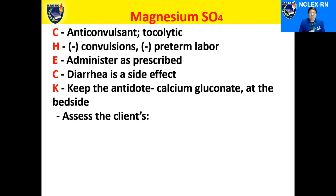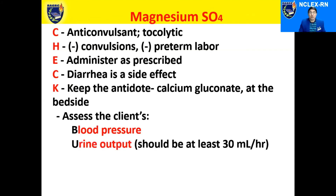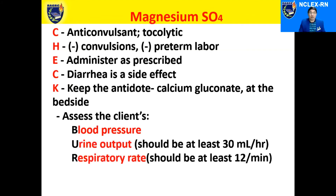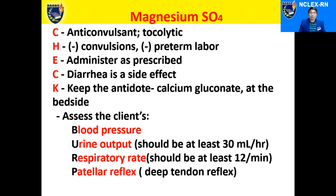When a patient is actually taking magnesium sulfate, we need to assess four things using the code BURP. We need to assess blood pressure, urine output — which should be at least 30 mL per hour — respiratory rate, which should be at least 12 per minute, and patellar reflex or deep tendon reflex. Remember the code BURP.